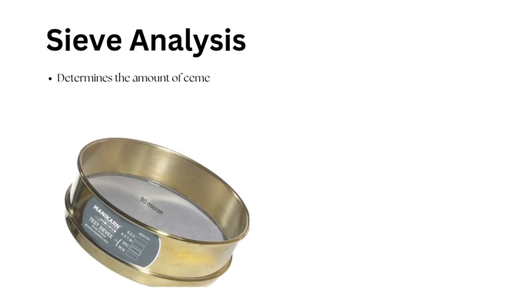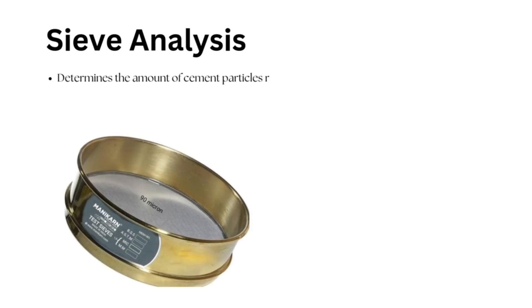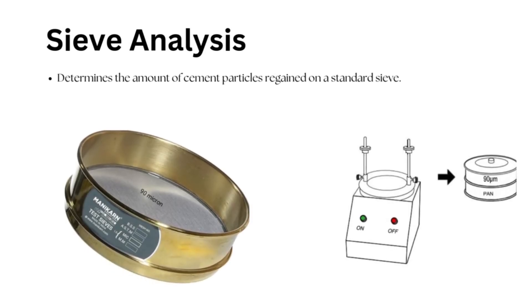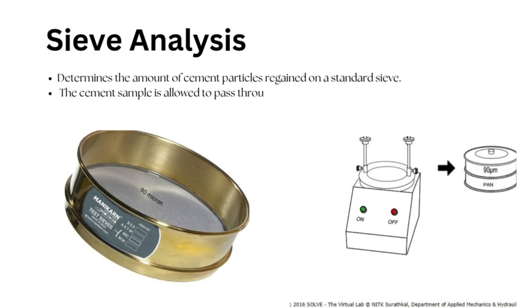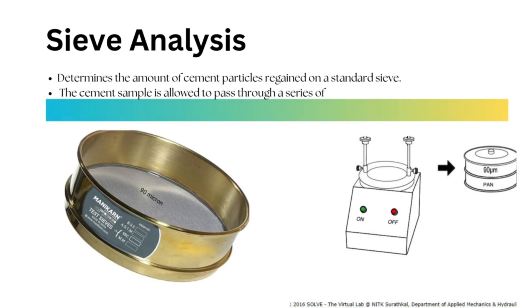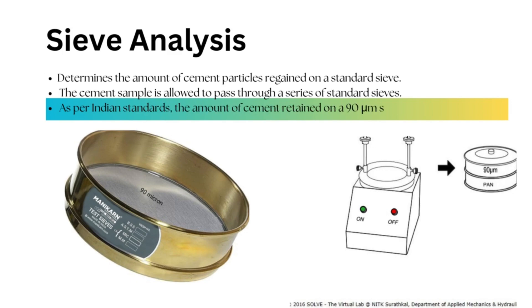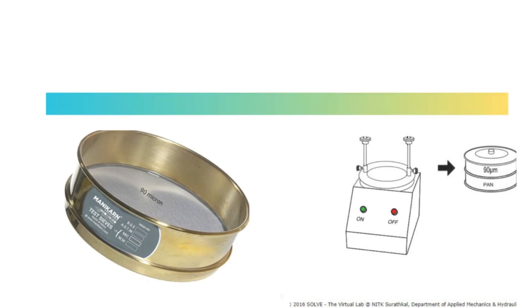Sieve Analysis: This test determines the amount of cement particles retained on a standard sieve. The cement sample is allowed to pass through a series of standard sieves. As per Indian standards, the amount of cement retained on a 90 micrometer sieve must not exceed 10%.